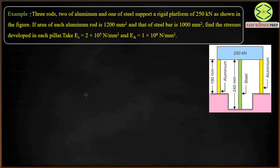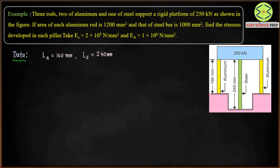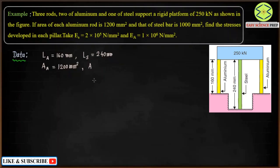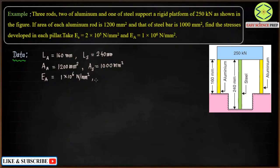We'll apply the same concept of the composite bar. Let me write down the data: the length of aluminum is 160 mm and the length of steel is 240 mm. The area of each aluminum rod is 1200 mm² and the area of the steel rod is 1000 mm². The modulus of elasticity of aluminum is 1 × 10⁵ N/mm² and the modulus of elasticity of steel is 2 × 10⁵ N/mm².